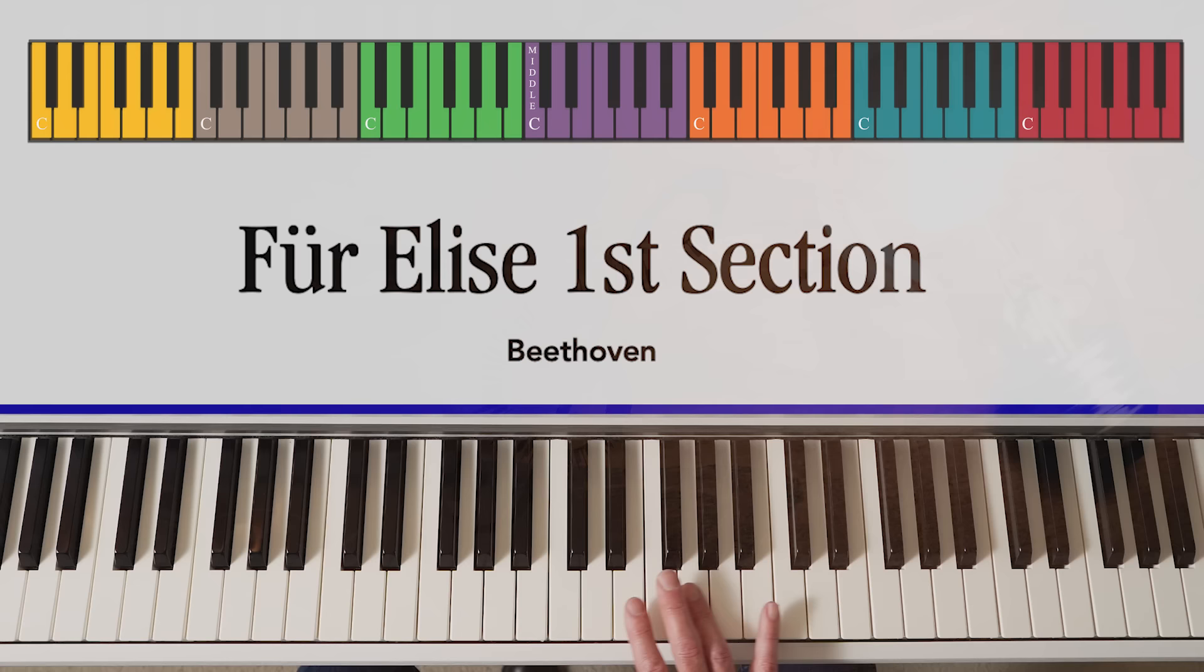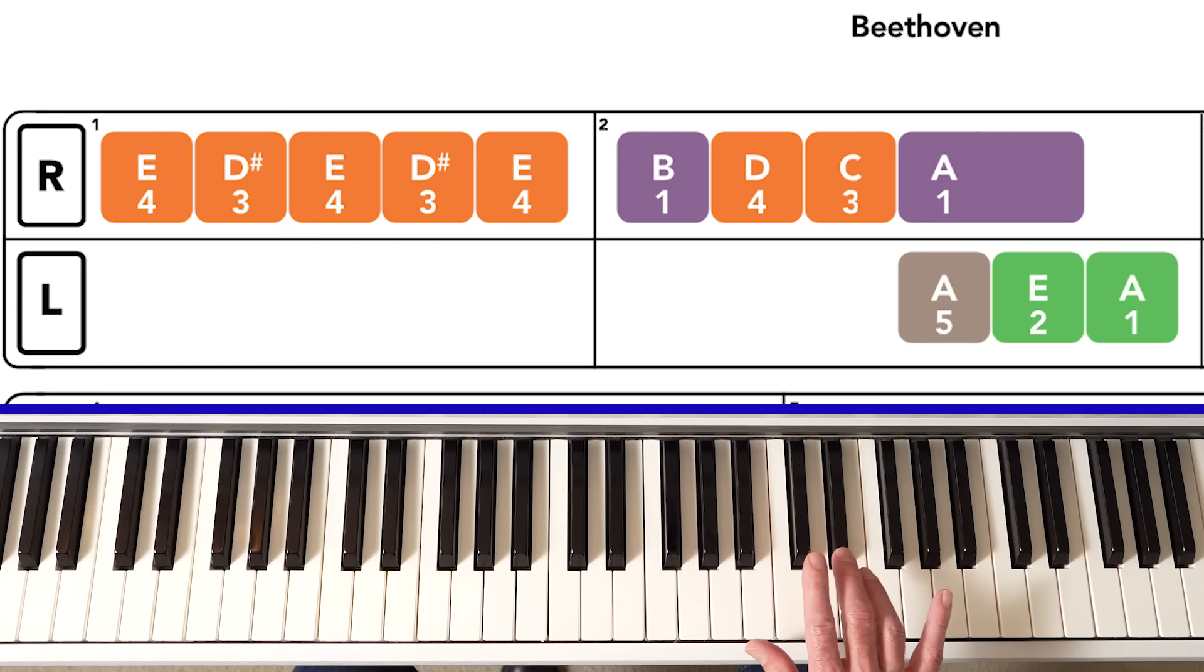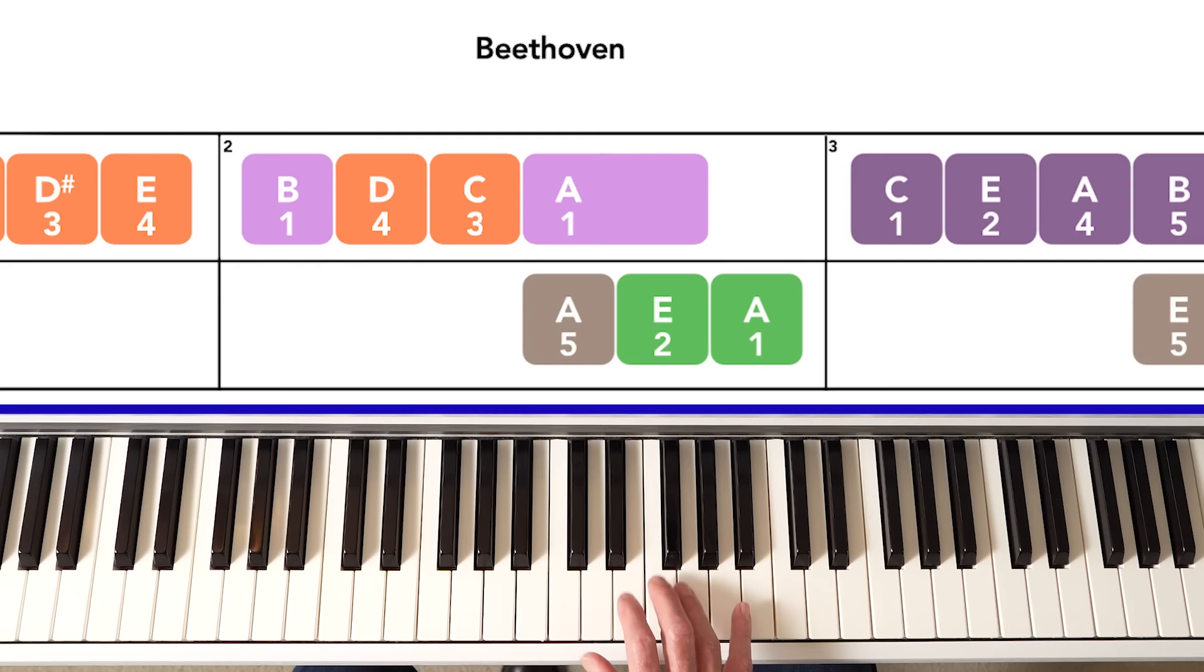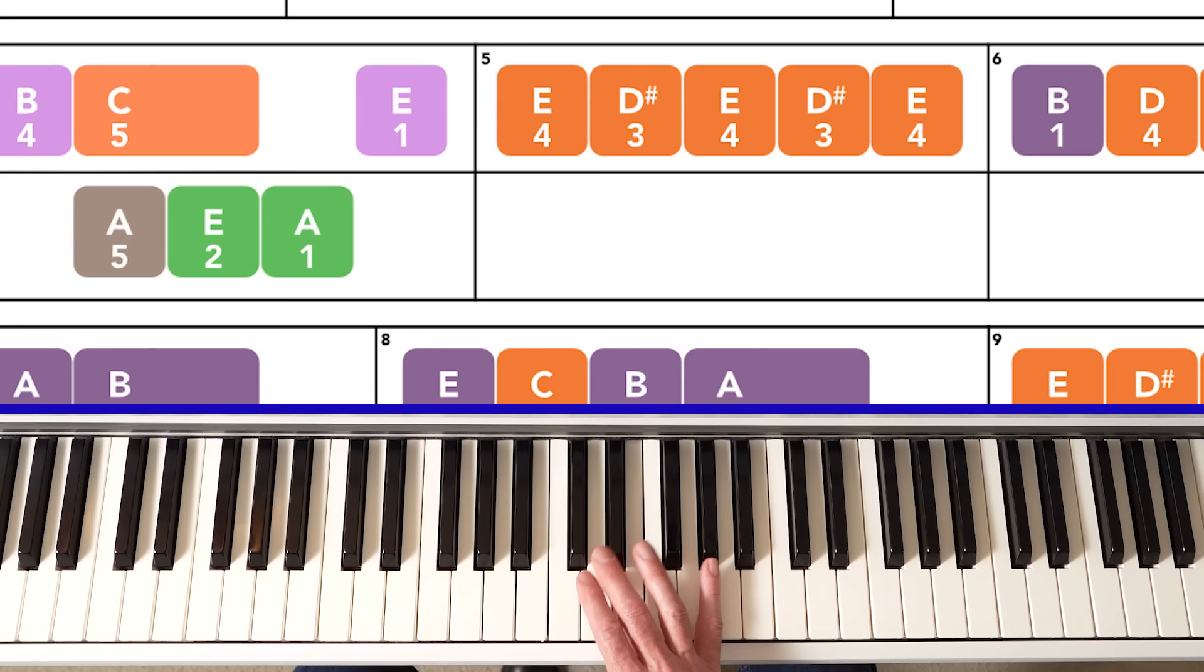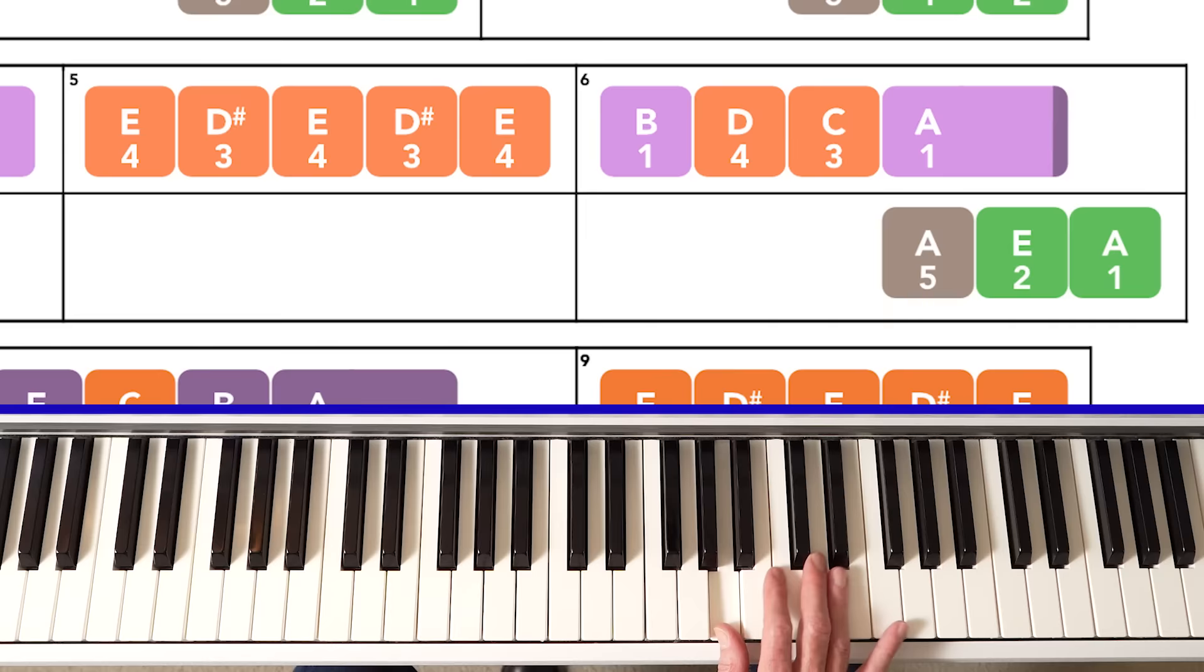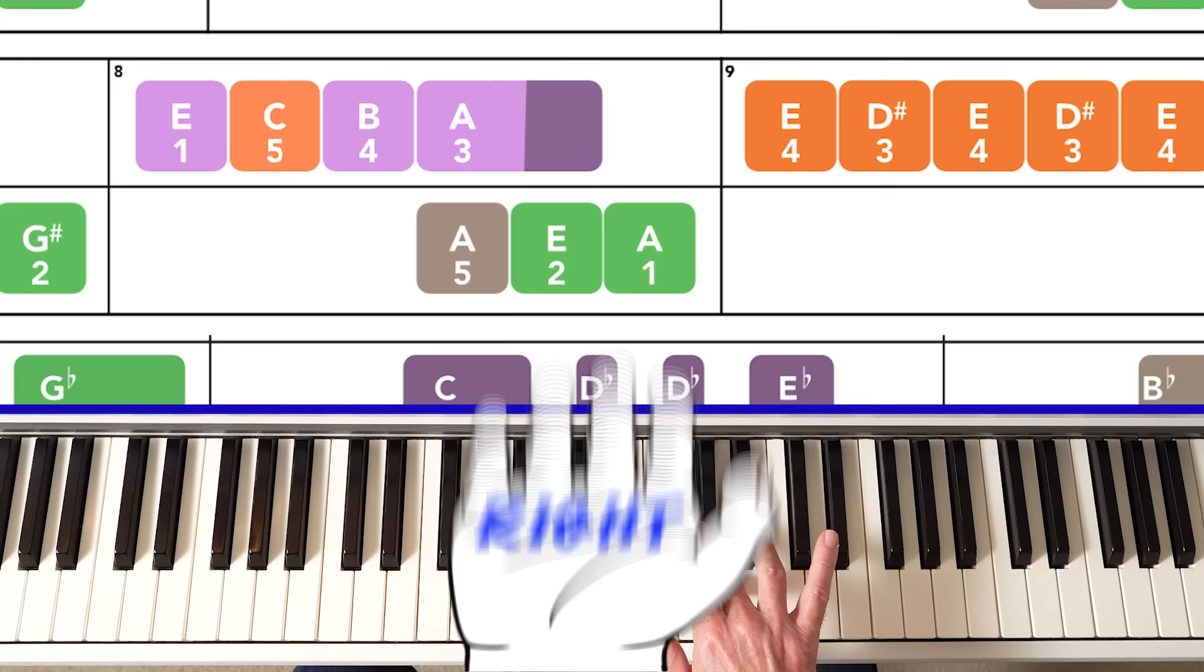Our first note is E, orange, second E above middle C, and tablature tells us to place finger 4 there. Down to the purple C, and ending with a thumb. And it repeats, almost. Down, and the change on the second.